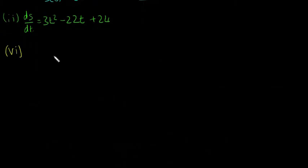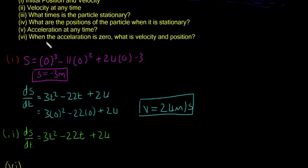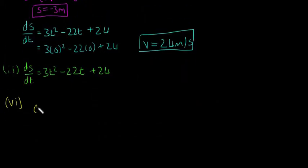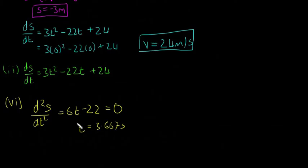Part 6: When the acceleration is zero, what is the velocity and the position? So first, we're going to have to find when the acceleration is zero. So if we remember, d²s/dt² equals 6t minus 22, and that's equal to zero, as we're told. And that will leave us that t equals 3.667 seconds.